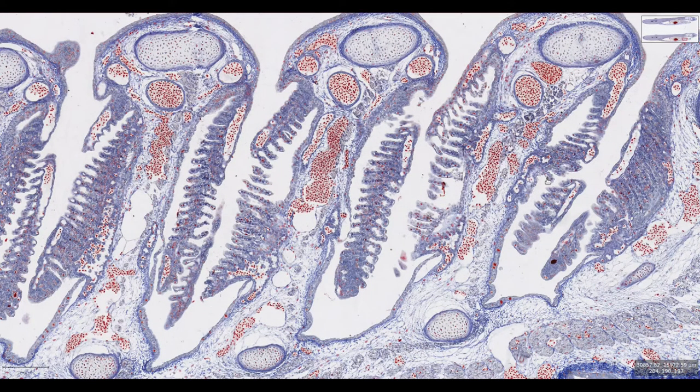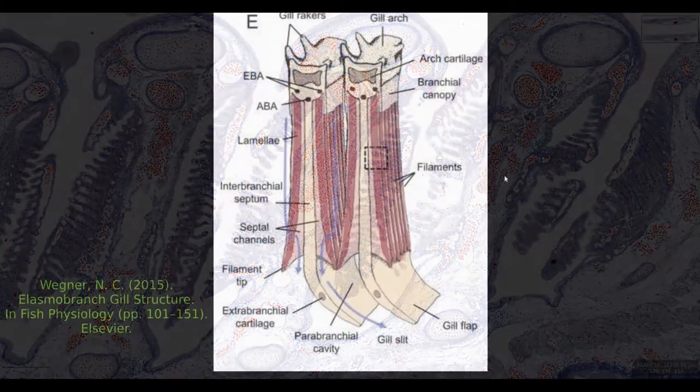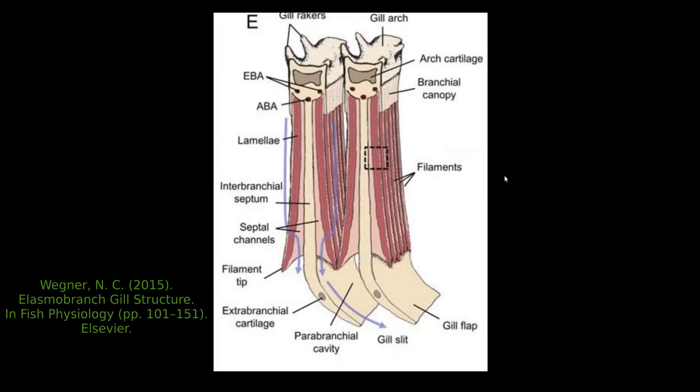Let's have a look at a schematic of the gill structure to see if we can relate it to what's on this slide. Here we can see a diagram of two gill arches. Each gill arch is supported by a central bit of cartilage, the arch cartilage. From the arch cartilage there's an extension of supportive connective tissue extending down to the jaw. This is the interbranchial septum which divides the anterior and posterior hemibranchs which supports the functional units of the gill.